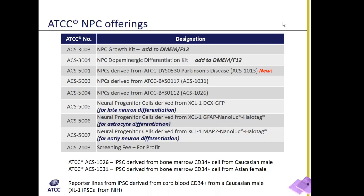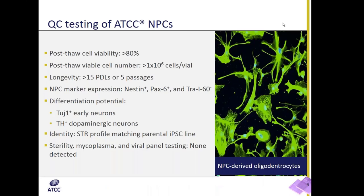We also carry a growth and expansion kit and a dopaminergic neuron differentiation kit, which you simply add to DMEM/F12 to make your complete medium. We perform full characterization of ATCC neural progenitor cells, including post-thaw cell count, cell longevity, neural progenitor cell marker expression, and neuronal differentiation potential. We also perform standard cell biology QC testing such as STR profiling, sterility, mycoplasma, and viral panel.